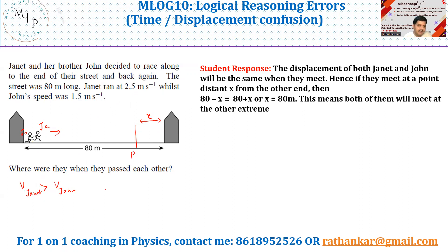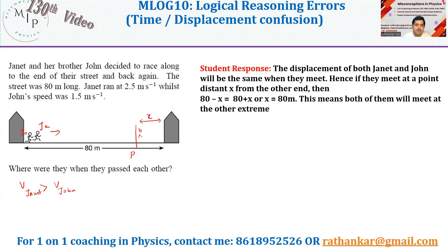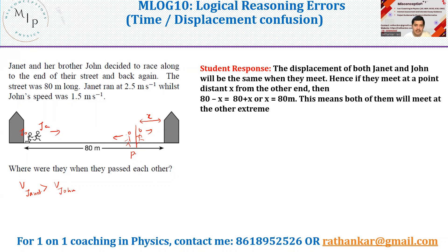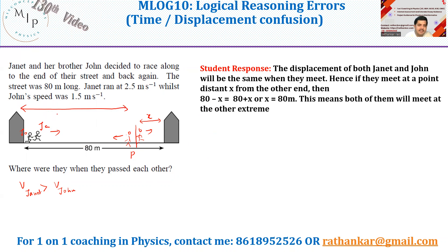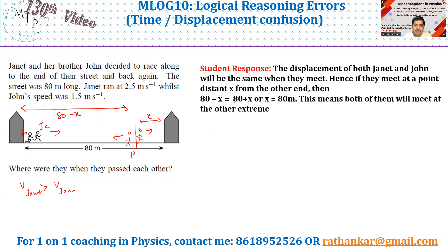Janet starts from the beginning, goes to the end, turns back, and meets John at point P. By this time Janet has gone to the end and returned partway, while John is still moving forward. So the distance covered by John is 80 minus x, and the distance covered by Janet is 80 plus x. He then equated these two.